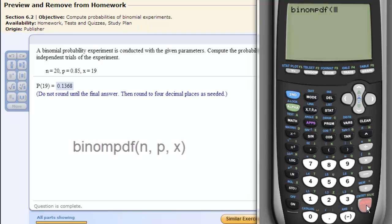Now the input into this is exactly how it's written here. You always have the number of trials, probability,